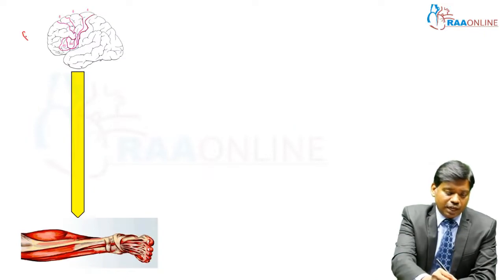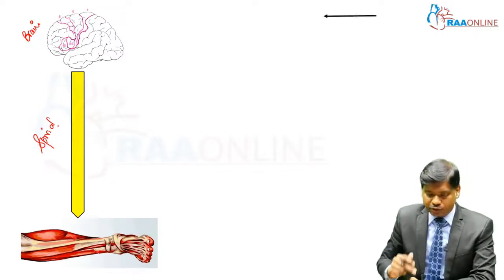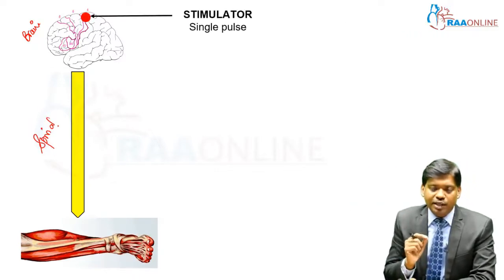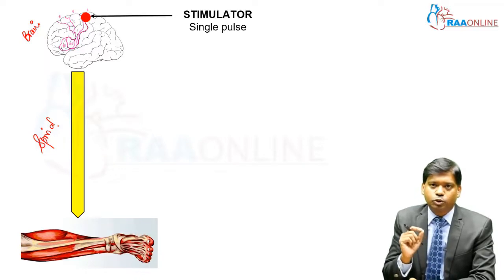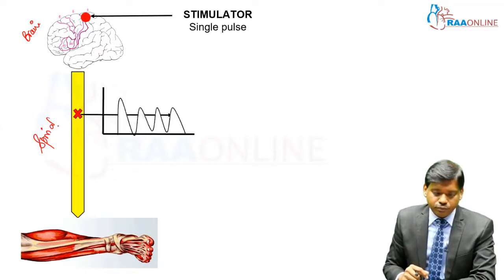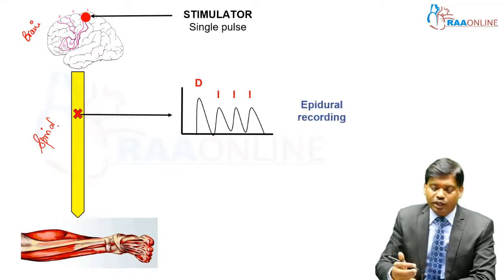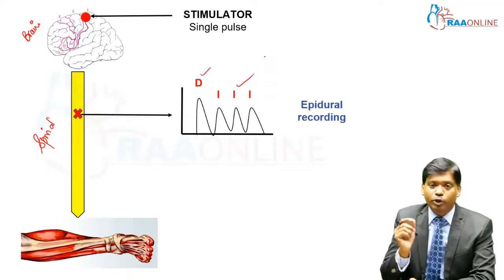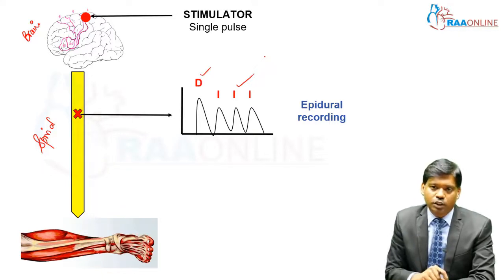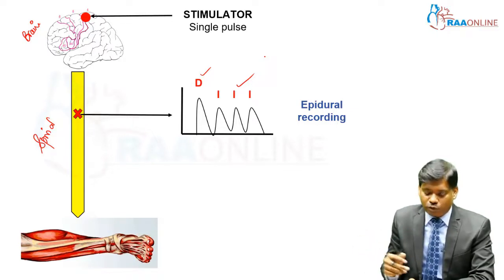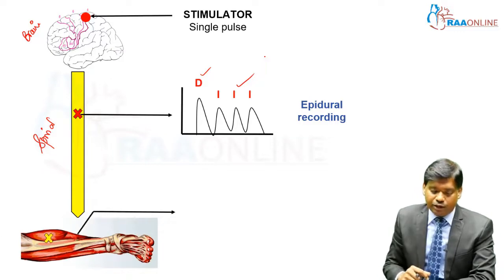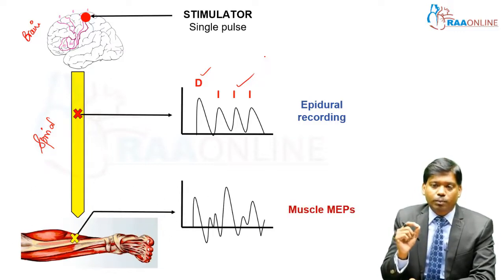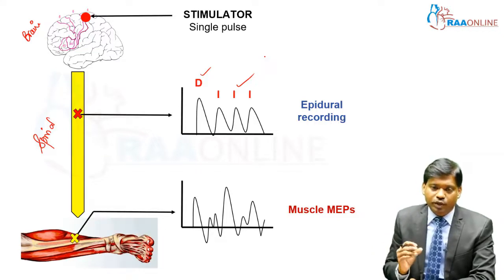Consider this as the brain and the yellow structure as the spinal cord. In a normal individual, when you apply a single pulse stimulus through a stimulator to the brain, you can record what is called a direct wave and indirect waves when an electrode is placed in the spinal cord. The D-wave is the direct wave — the impulse seen directly in the spinal cord — while the remaining waves are indirect waves. When an electrode is placed in the muscle, you obtain what is called muscle MEPs.